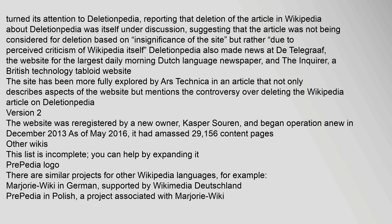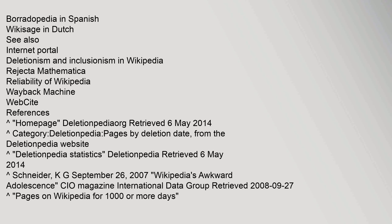There are similar projects for other Wikipedia languages. For example, Marjorie Wiki in German, supported by Wikimedia Deutschland; Propedia in Polish, a project associated with Marjorie Wiki; Borodopedia in Spanish; and Wikisage in Dutch.